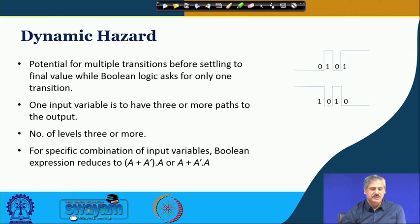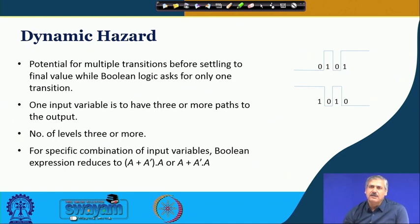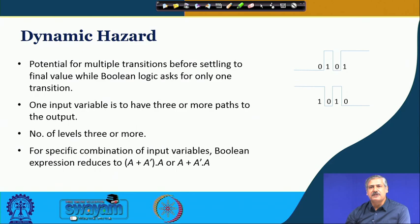Now we discuss Dynamic Hazard. Dynamic hazard is the case when there is a potential for multiple transitions. While the circuit is required to make one transition from 0 to 1 or from 1 to 0, it actually makes more than one transition. This is what is known as dynamic hazard.